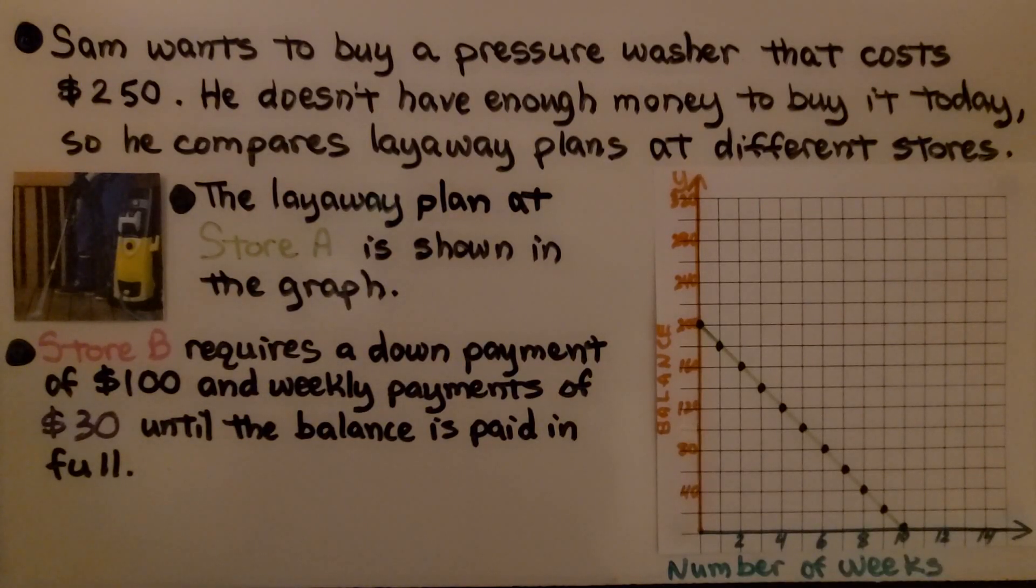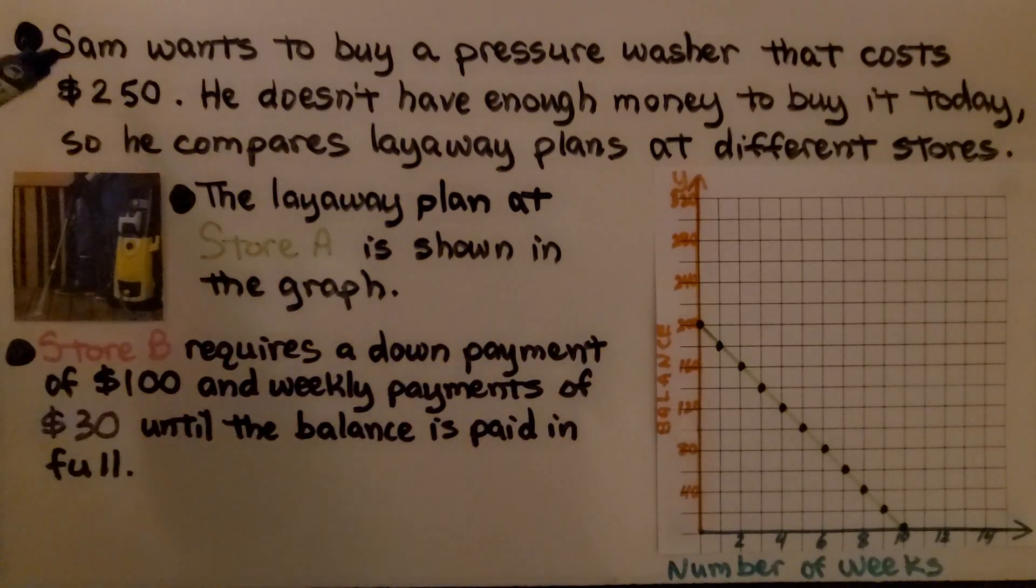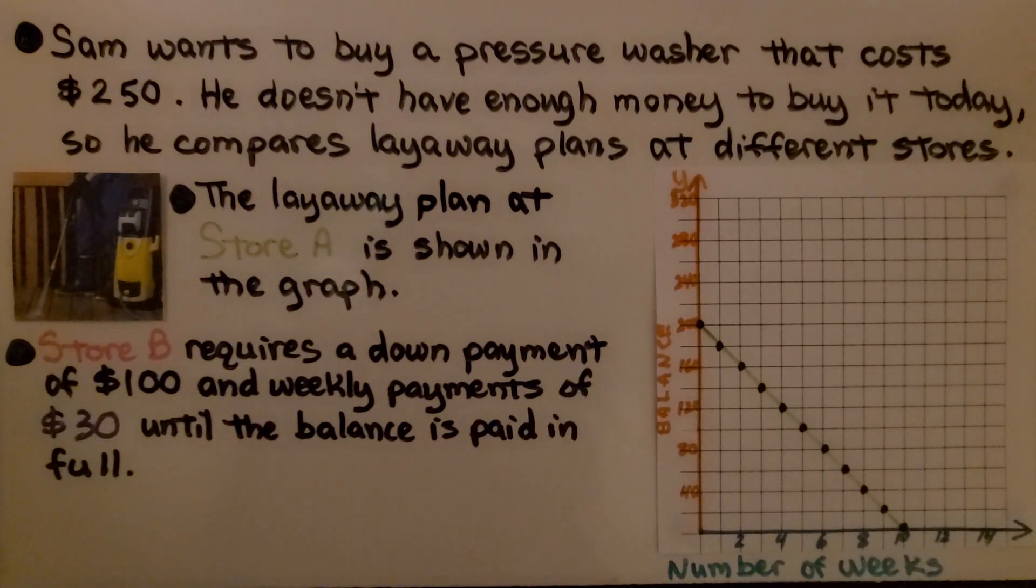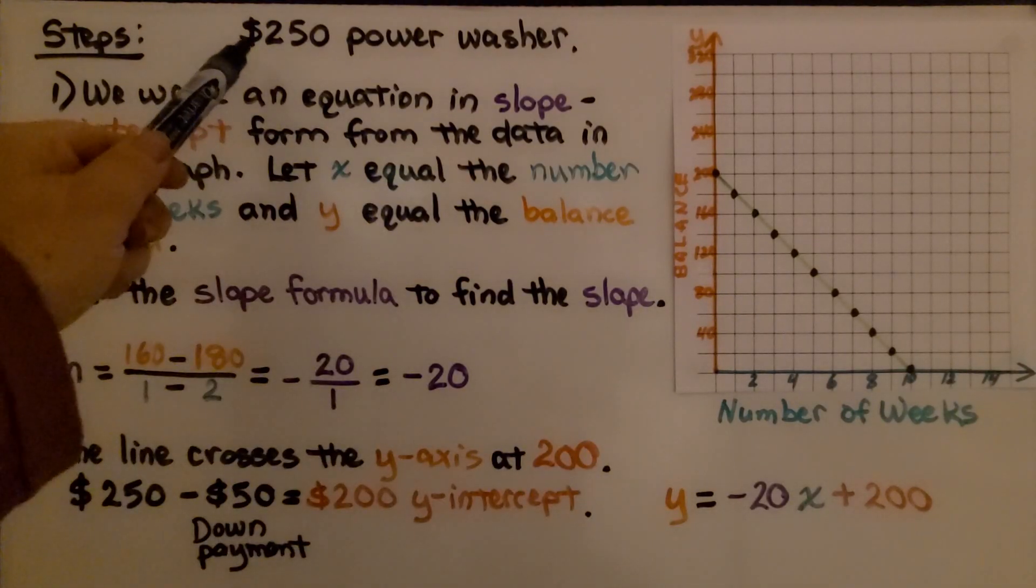Sam wants to buy a pressure washer that costs $250. He doesn't have enough money to buy it today, so he compares layaway plans at different stores. The layaway plan at store A is shown in the graph. Store B requires a down payment of $100 and weekly payments of $30 until the balance is paid in full. Looking at this graph, it's skip counting by 40s. We can see it starts at $200, but it costs $250. That means there must have been a down payment before he started making the regular payments. So we know this is the graph for store A.